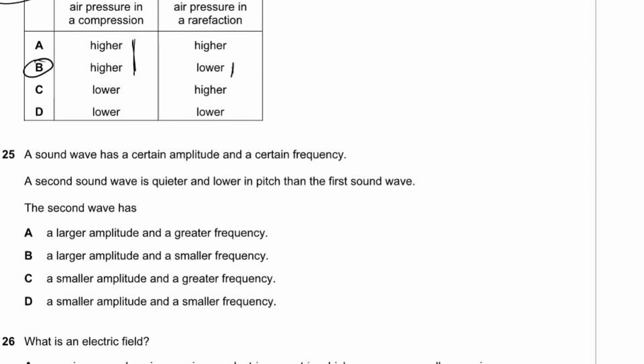Question 25. A second sound wave is quieter and lower in pitch than the first. Quieter means smaller amplitude; lower pitch means smaller frequency. We're looking for smaller amplitude and smaller frequency. Answer D.